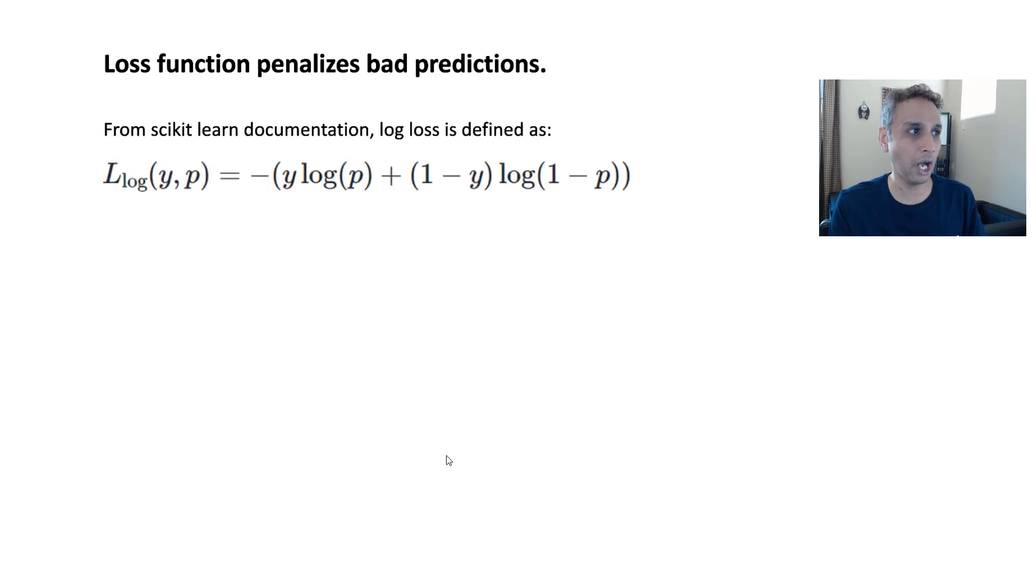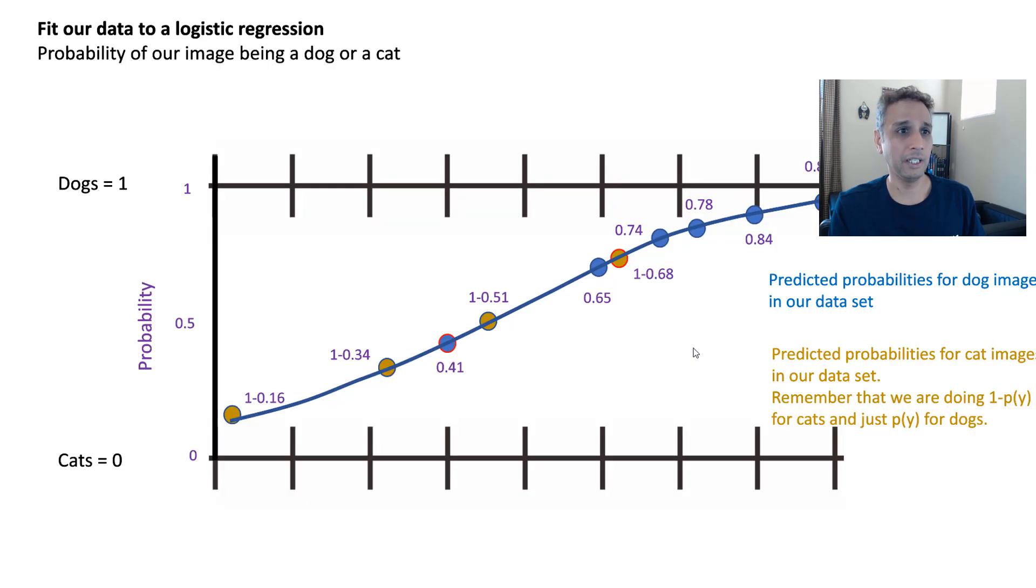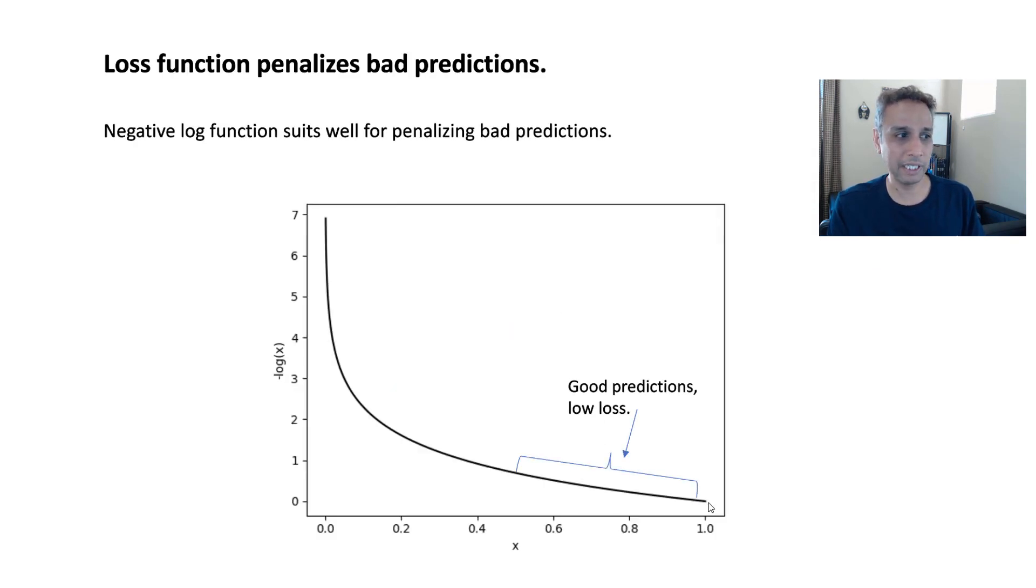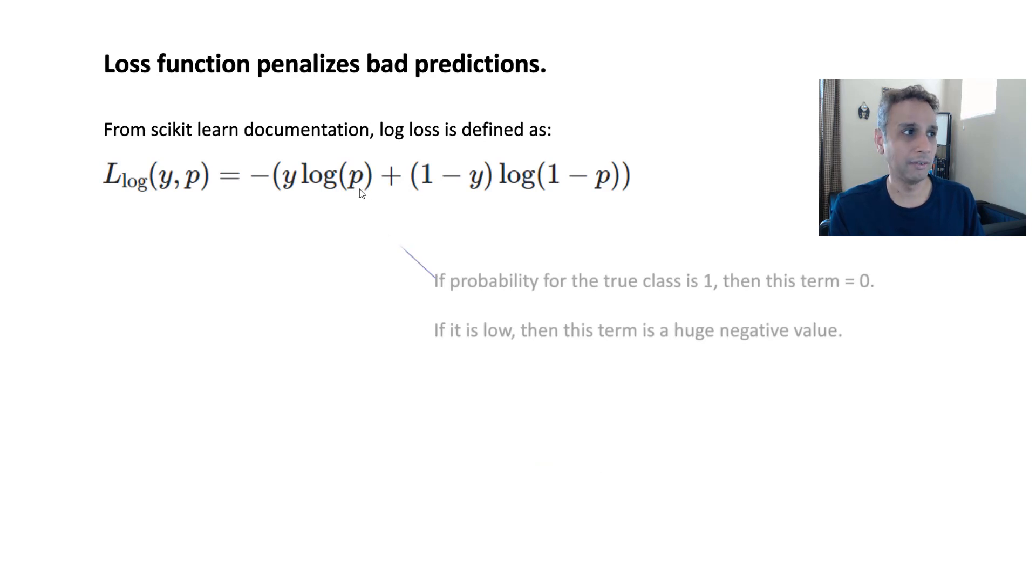This is exactly why our cross entropy uses a log function. In fact, sometimes it's referred to as log loss, not just cross entropy loss, but log loss. This is exactly the reason because we are using the log function to represent this. From scikit-learn documentation, if you look at the log loss, the definition of log loss is, for binary, y log p plus 1 minus y log 1 minus p. So y is basically the class label and p is the probability for that specific class label.